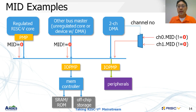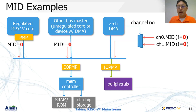This slide depicts an example of MID and the MID assignment policy. In the top half, there are three types of bus masters. We can see that a RISC-V core has a regulated PMP, so it uses a zero MID. In the middle, there is an untrusted bus master, which should be marked as a non-zero MID. The two-channel DMA on the right should use different MIDs for the two channels, so the channel number in use should be passed out.